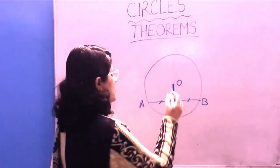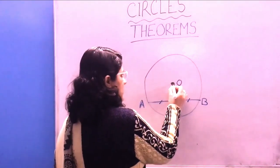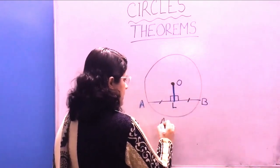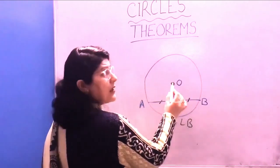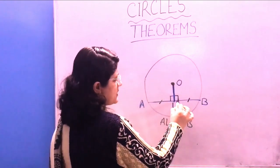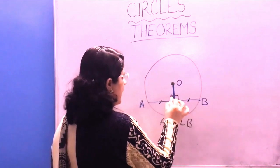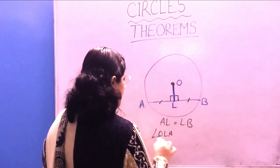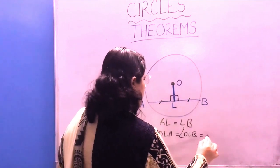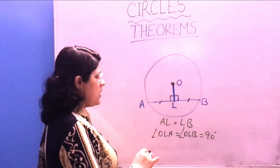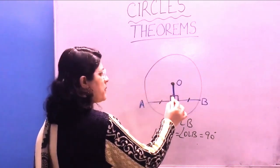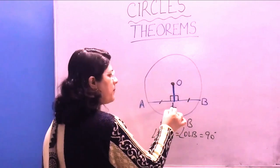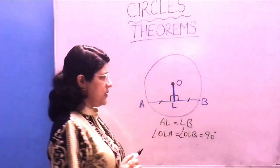The first theorem is: if a straight line is drawn from the center of a circle which bisects the chord AB — meaning AL is equal to LB — then this straight line makes an angle of 90 degrees with the chord. So angle OLA as well as angle OLB is equal to 90 degrees. Vice versa, if the line is perpendicular to the chord, then L is the midpoint of chord AB, meaning AL is equal to LB. This is our first theorem.